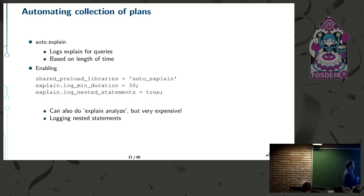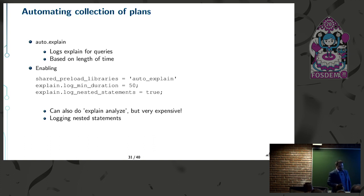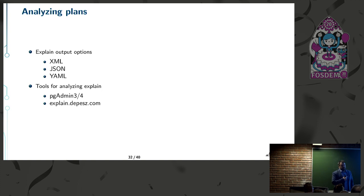You can automate plan collection using auto_explain, which logs EXPLAIN for all queries based on a duration threshold. Add it to shared_preload_libraries, set log_min_duration, and optionally enable logging of nested statements inside PL/pgSQL. You can also log EXPLAIN ANALYZE, though that's very expensive. EXPLAIN supports XML, JSON, and YAML output formats. There are tools for analyzing explain output — pgAdmin 3/4, as well as a really useful site called explain.depesz.com where you can paste your plan and get a visual representation.